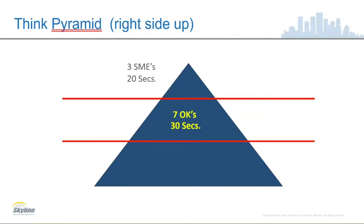But if the 30 seconds expires, we go down and look at our last resorts — the last ten of those 20 agents. They're our last resorts. When we get into this last step, we need to wait forever; there's no time limit we put.